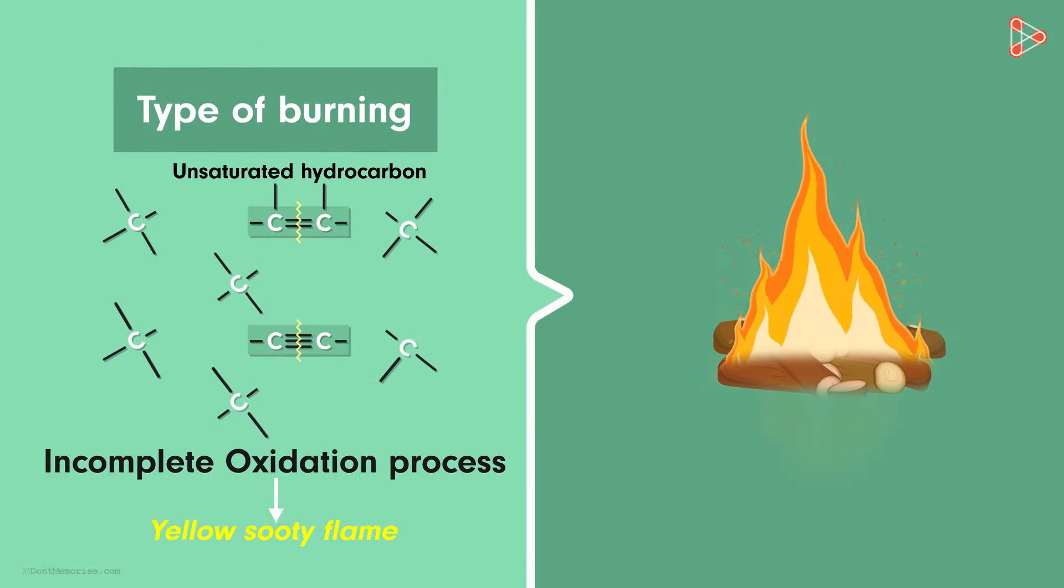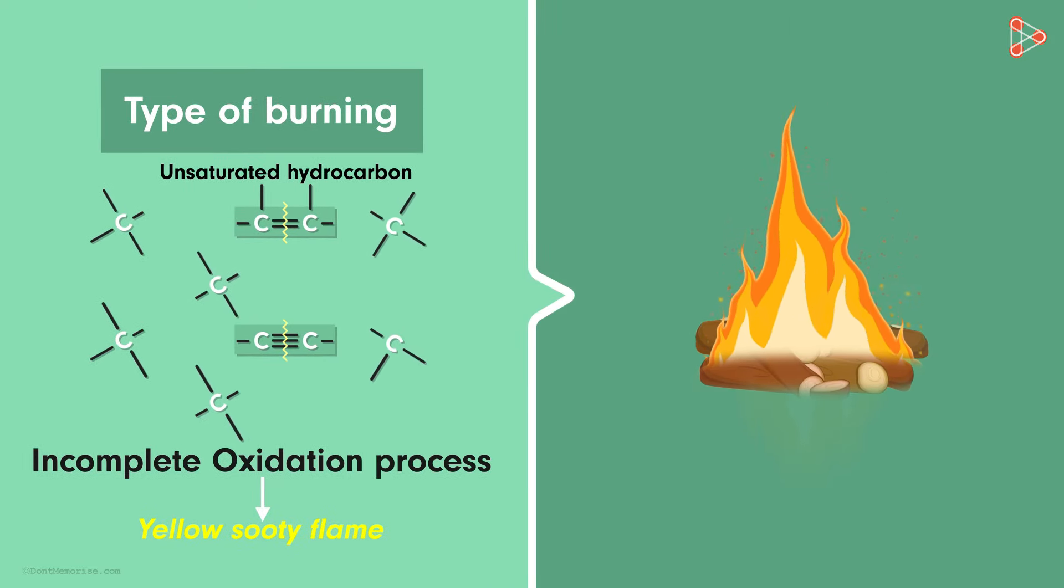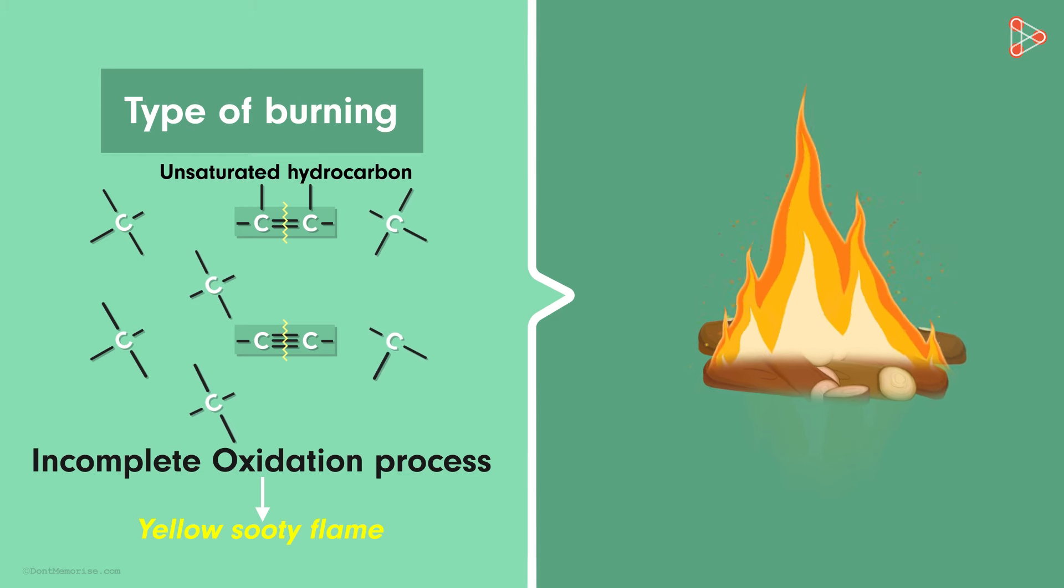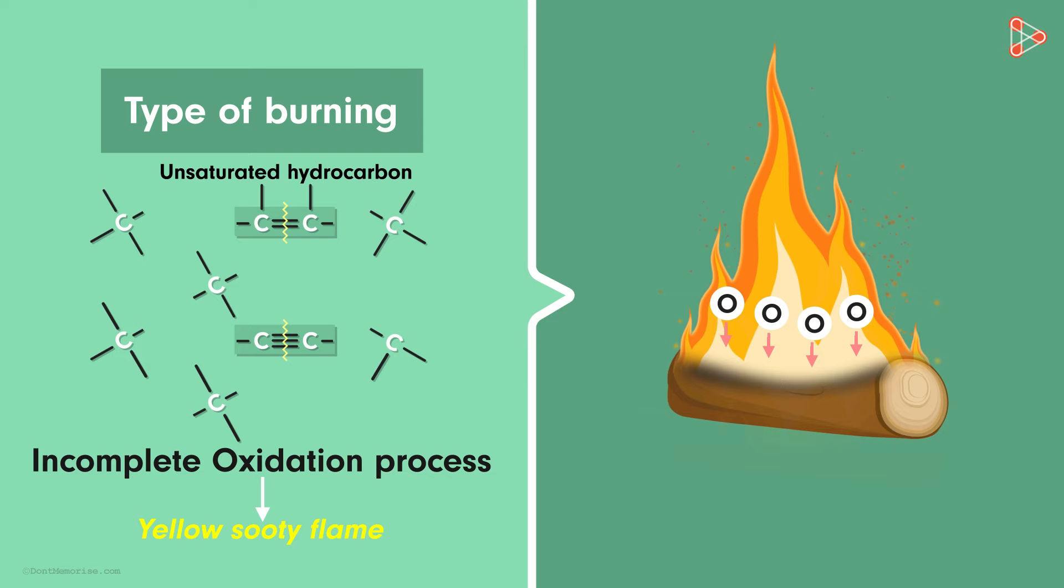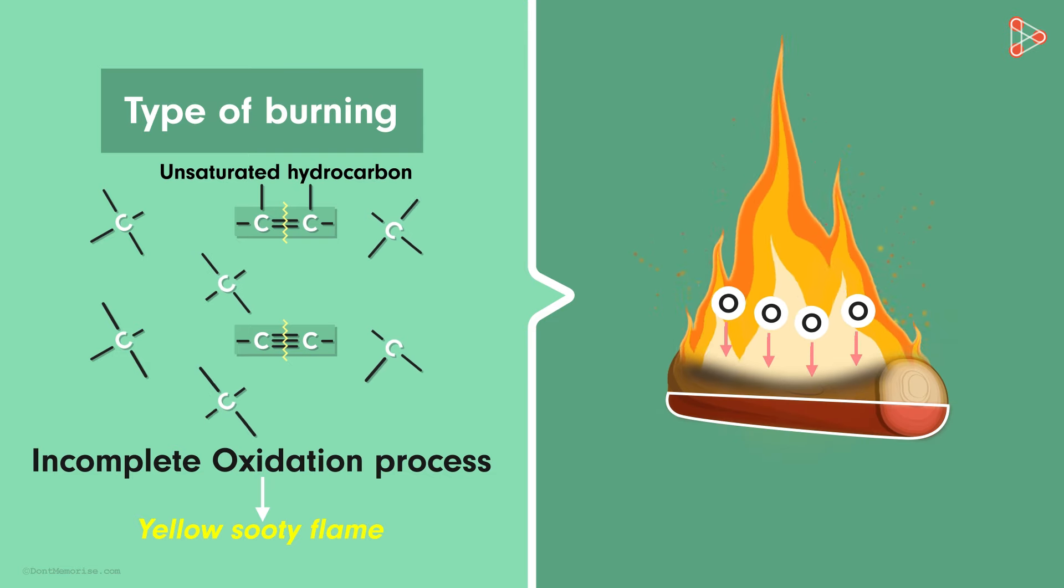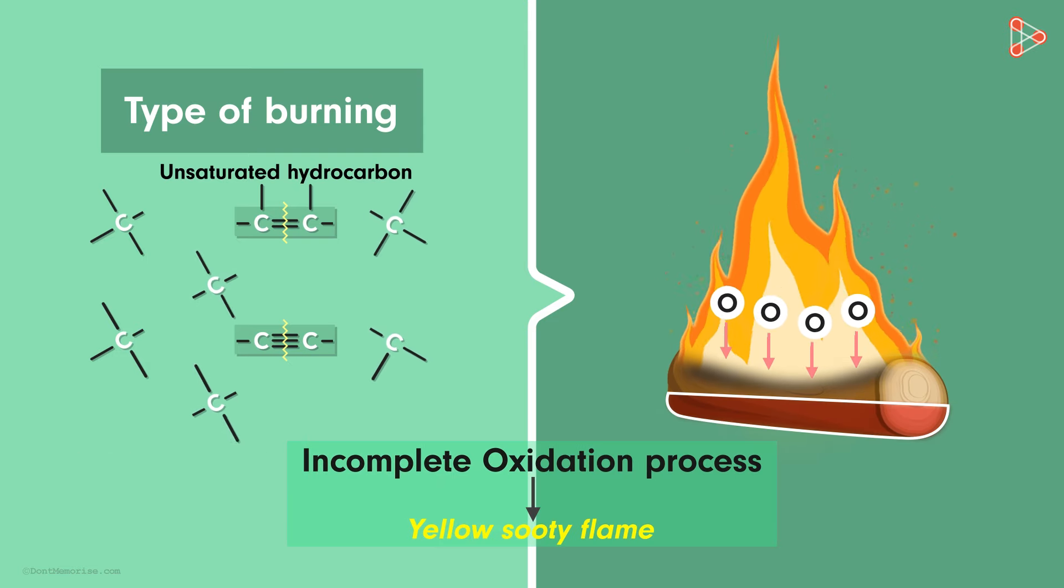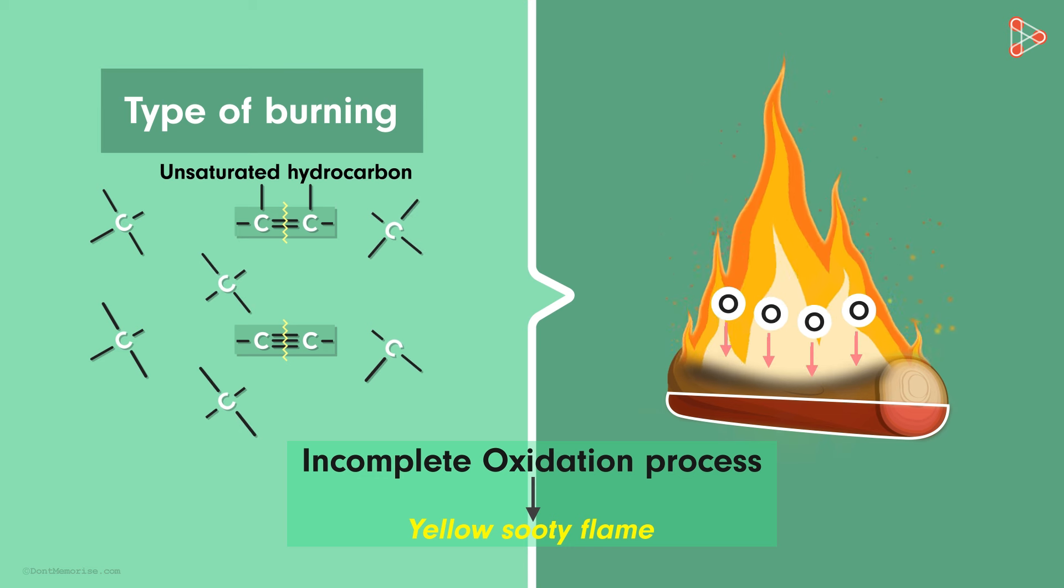But our second example was that of burning wood. So what is the connection between these points? Well, wood burns very rapidly. That means the upper surface in contact with air burns too quickly. As a result, it becomes difficult for oxygen to reach the deeper layers. And thus, incomplete combustion results in yellow flame with soot.